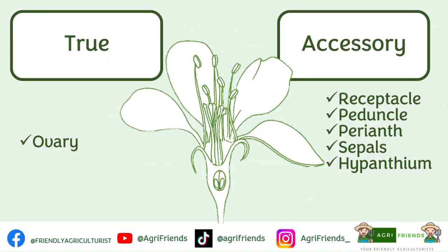A fruit can be classified as a true or accessory fruit. True fruits are derived from the ovary and its parts, while accessory fruits are those that develop from other parts of the flower, such as the receptacle. An example of that is the mulberry and the pineapple.